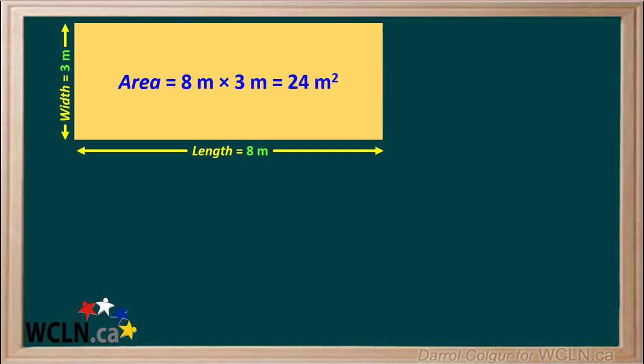Rectangles with the same area do not need to have the same dimensions. For example, this rectangle has an area of 8 meters times 3 meters, which is 24 meters squared.